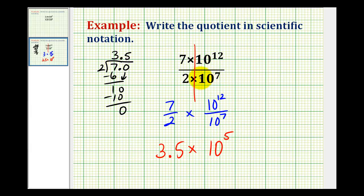So this quotient is equal to three point five times ten to the fifth. Notice how it is in the correct form for scientific notation. Remember this number here has to be greater than or equal to one and less than ten.